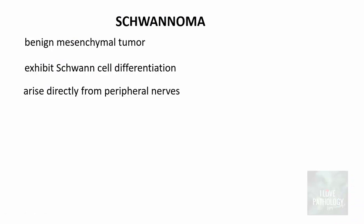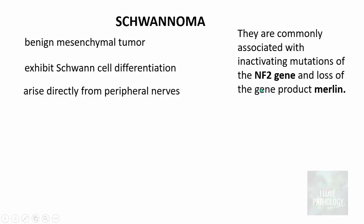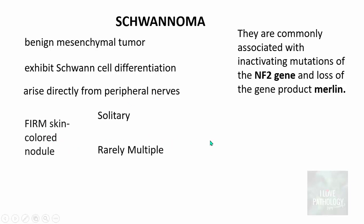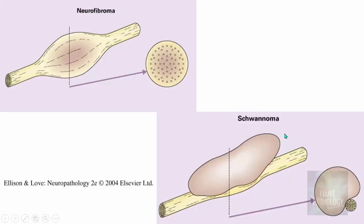Now moving on to schwannoma. Schwannoma is also a benign mesenchymal tumor exhibiting schwann cell differentiation; these are tumors that arise directly from the peripheral nerves. They are commonly associated with inactivating mutations of the neurofibromatosis type 2 gene, with loss of the gene product merlin. They present as firm skin-colored nodules, often solitary and very rarely multiple.